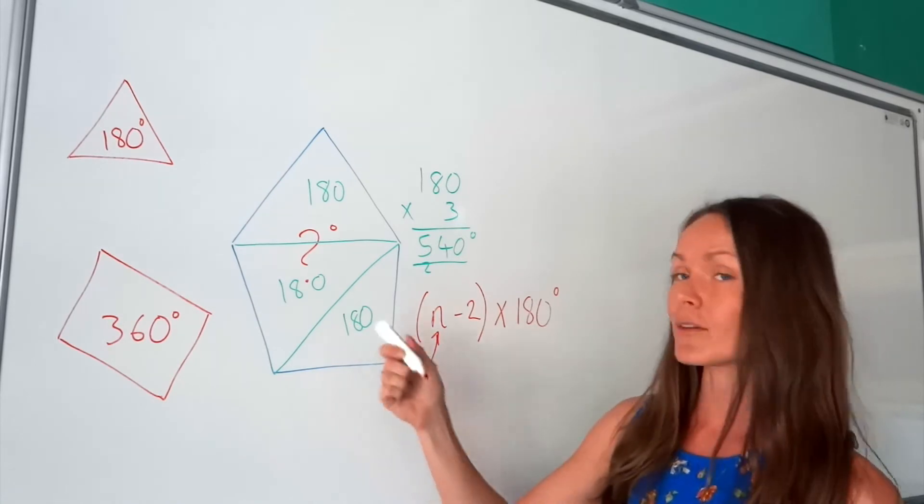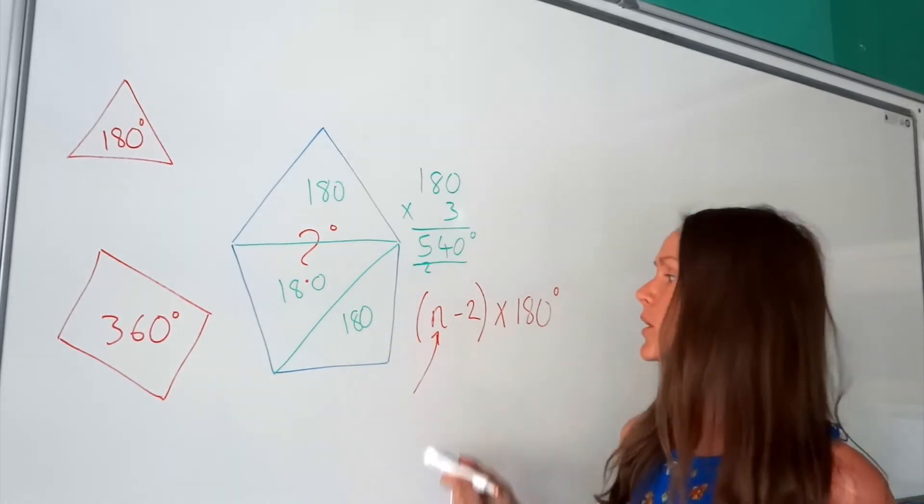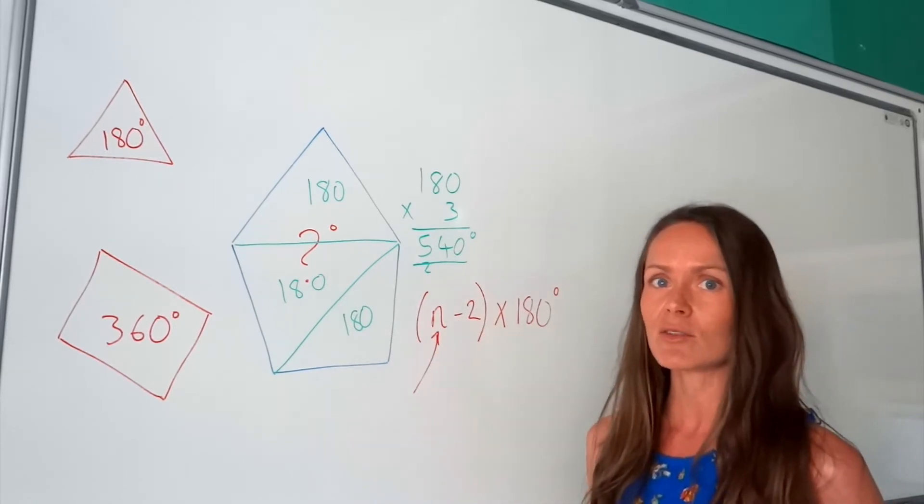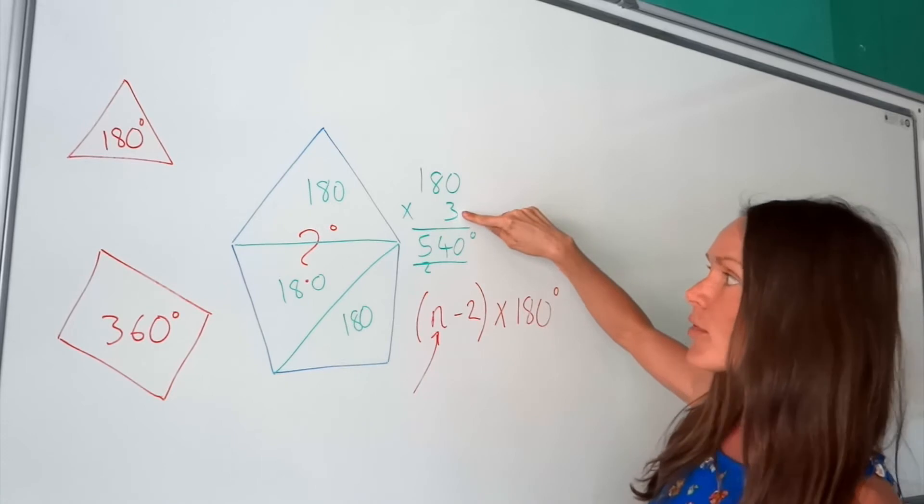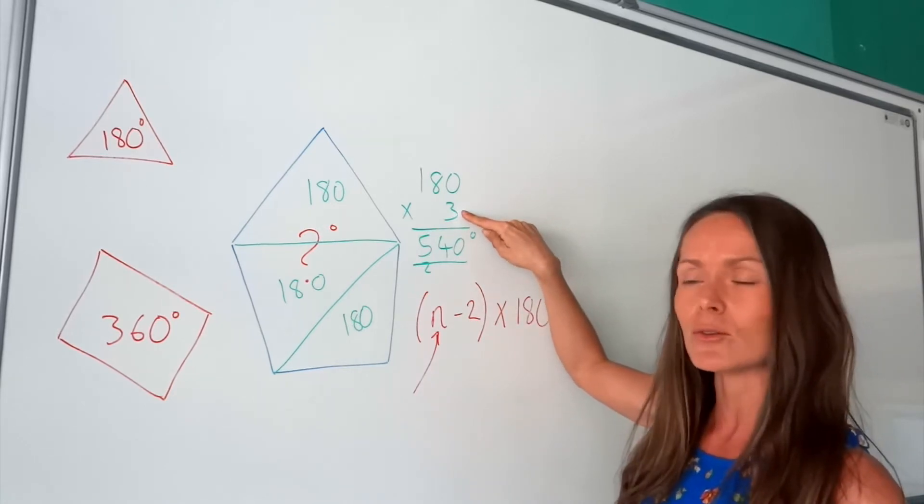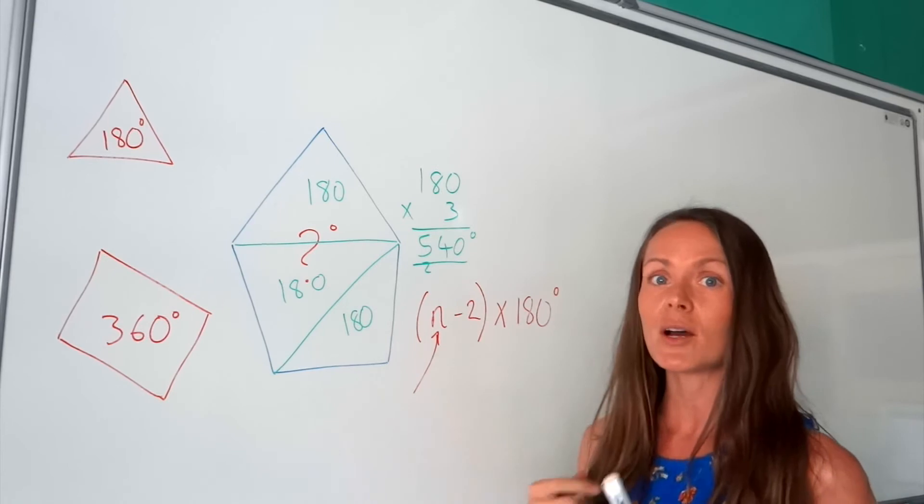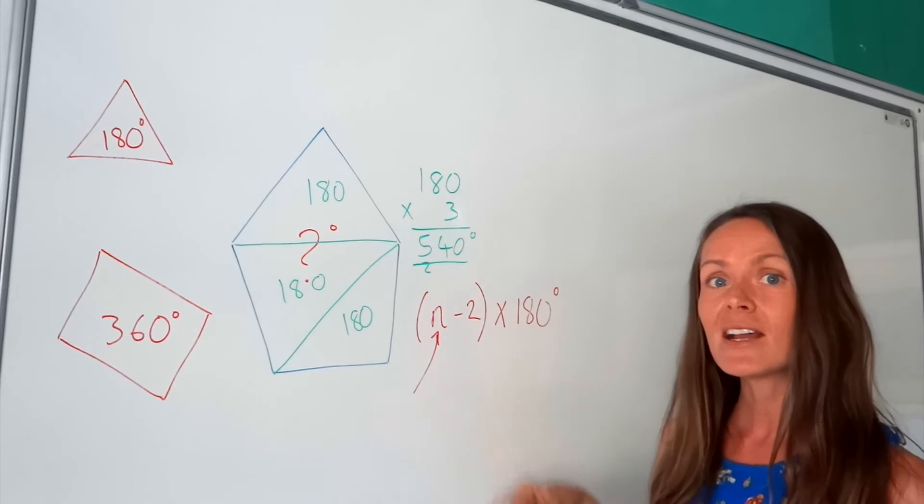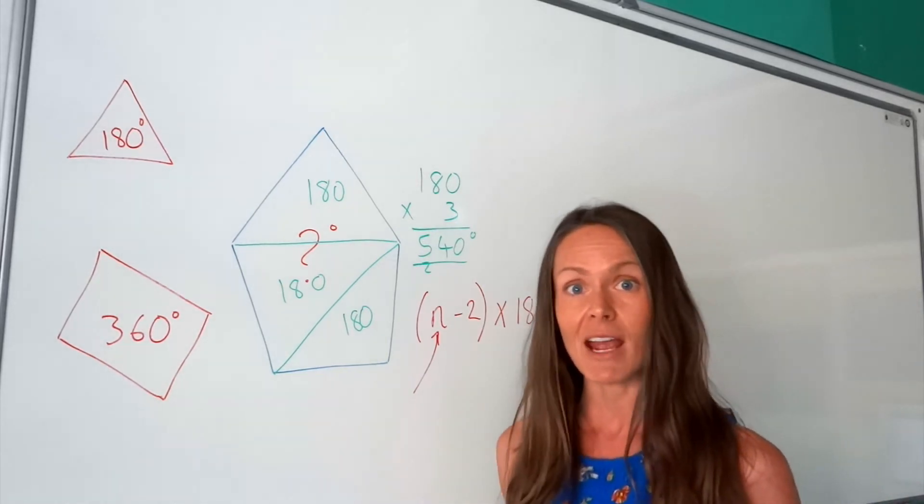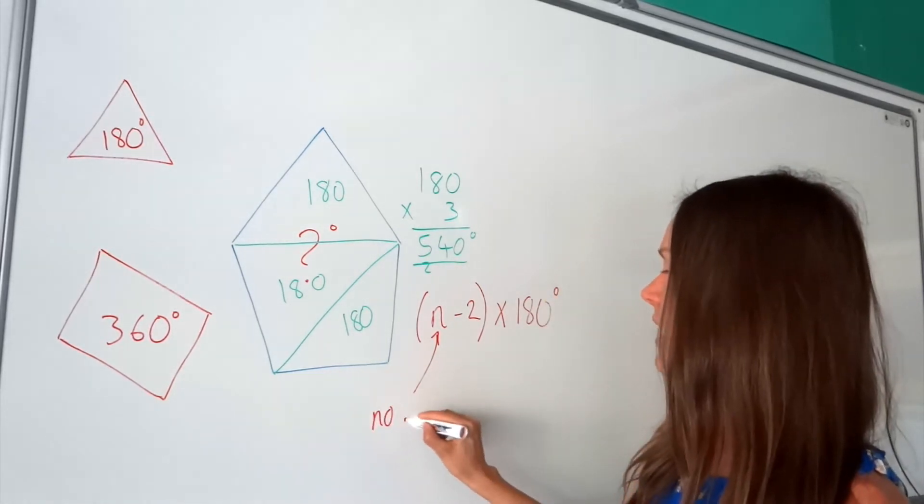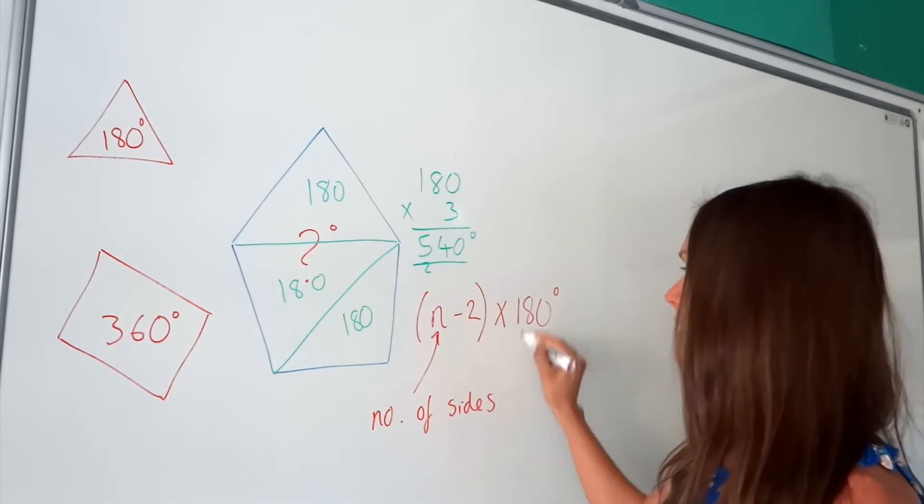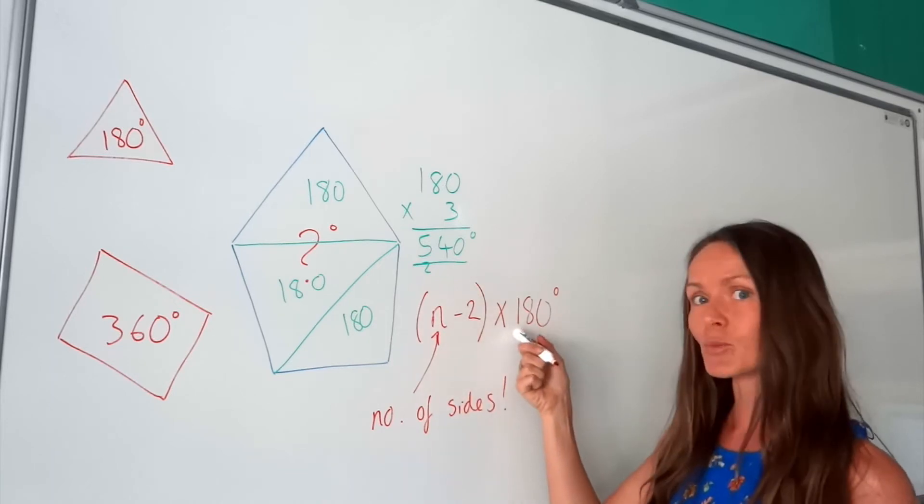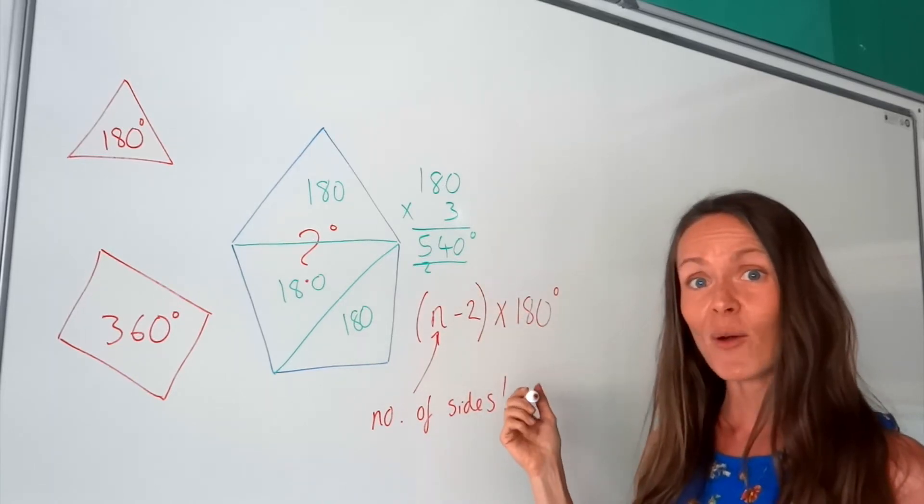So in this question here for a pentagon, it was a five-sided shape. So n would have been 5. Well if we do 5 minus 2, it gives us 3. Well look, here 3 was the number of triangles. So this bracket actually works out the number of triangles in the shape, and then you multiply the answer by 180 to calculate the sum of interior angles. So n is the number of sides. You always minus 2, keep that in brackets, and then you multiply that answer by 180.